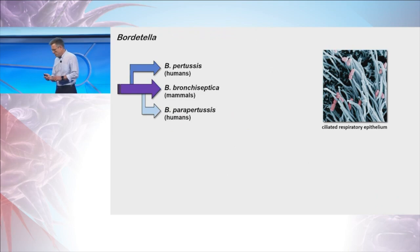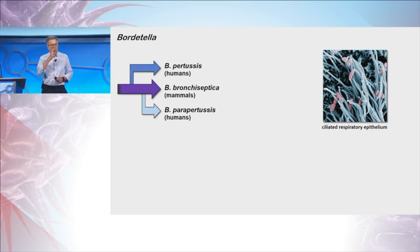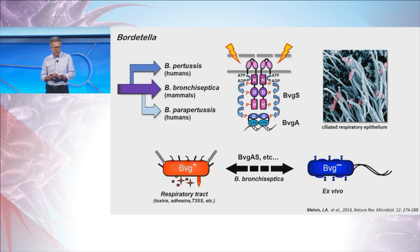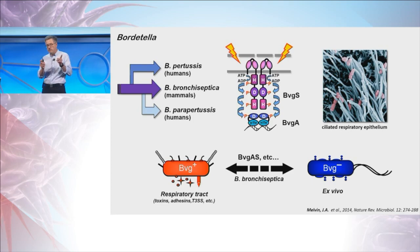The story begins with an interest that my lab has had for quite some time in Bordetella species, which are gram-negative bacteria that infect ciliated respiratory epithelial surfaces in humans and other mammals. We were studying a phosphorelay system, which we knew at the time orchestrates the Bordetella infectious cycle. It's a BBGAS phosphorelay, and it can position different Bordetella species into phases adapted for life in the respiratory tract, outside the host, or potentially during transmission.